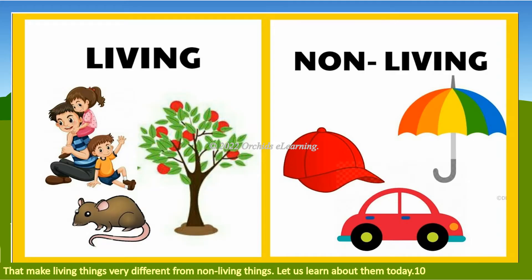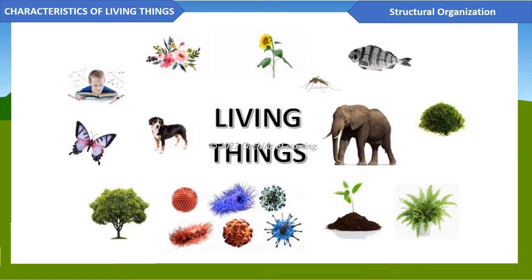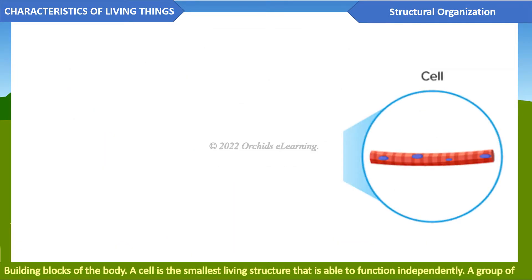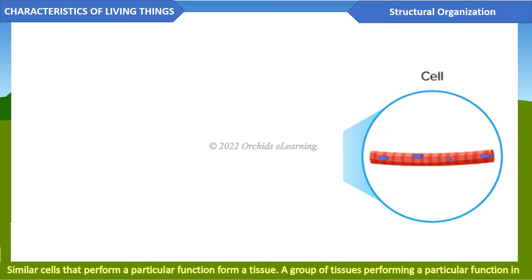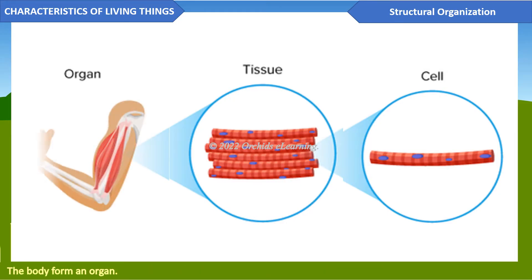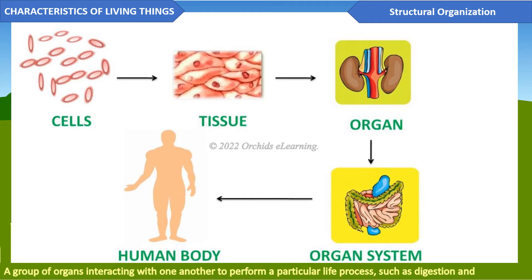Structural organization: living things have a definite structural organization. The bodies of living things are made up of cells, which are the building blocks of the body. A cell is the smallest living structure that is able to function independently. A group of similar cells that perform a particular function form a tissue.